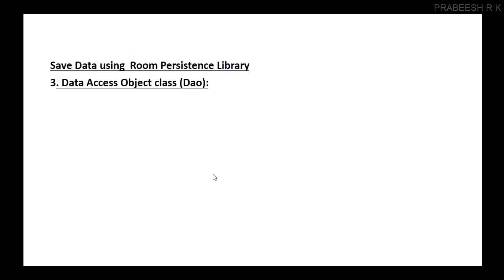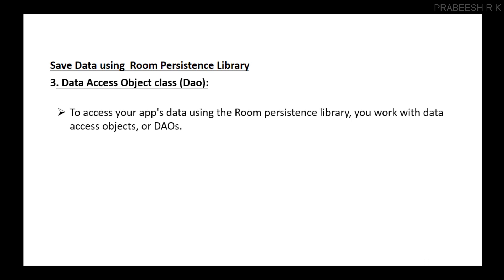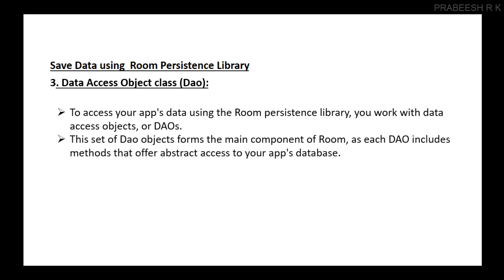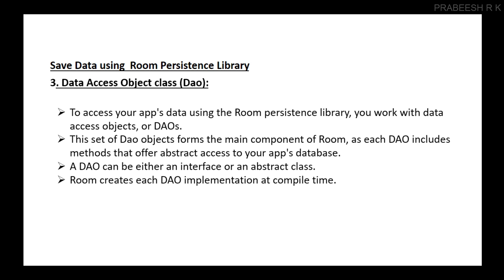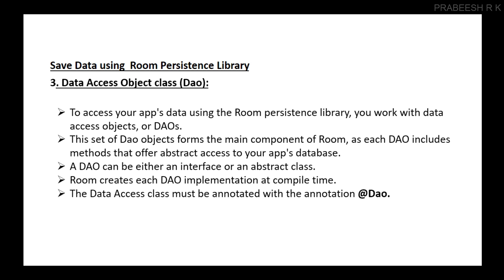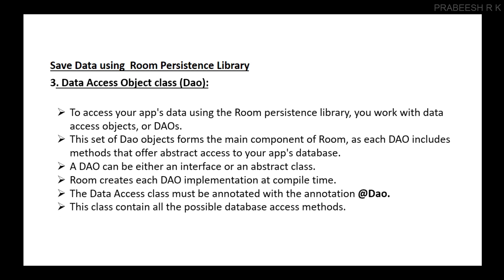The final component is the Data Access Object class. To access your app's data using the Room persistence library, you work with Data Access Objects or DAOs. This set of objects forms the main component of Room, as each DAO includes methods that offer abstract access to your app's database. A DAO can be either an interface or an abstract class. Room creates each DAO implementation at compile time. The Data Access Object class must be annotated with the annotation @Dao and contains all the possible database access methods.